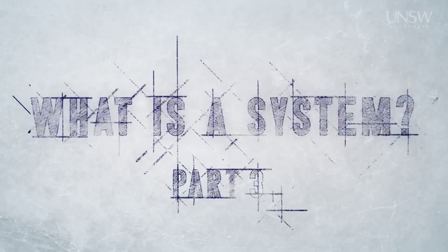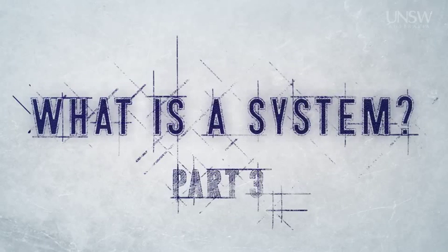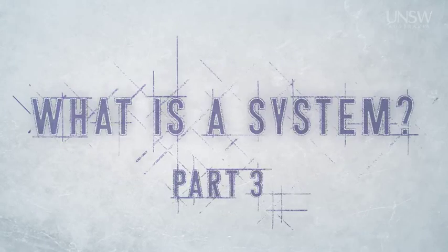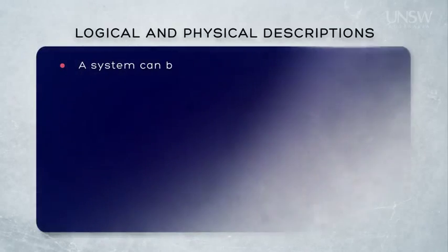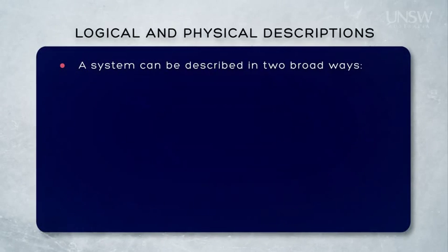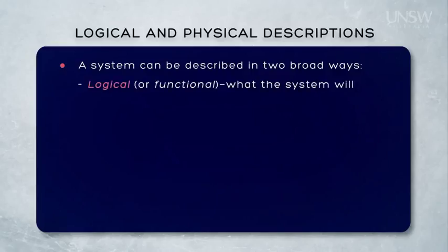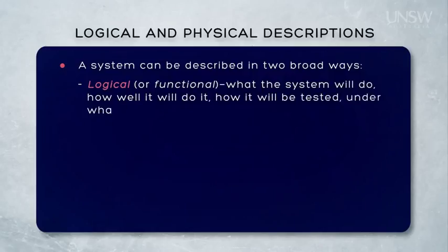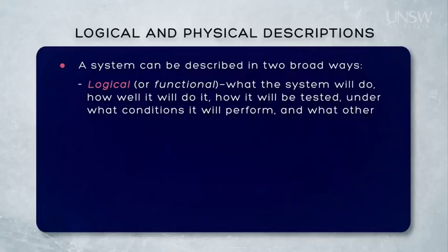A system can be described in two broad ways: in logical terms and in physical terms. A logical description — historically we've often called that a functional description — articulates what the system will do, how well it will do it, how it will be tested, under what conditions it will perform, and what other systems will be involved with its operation.